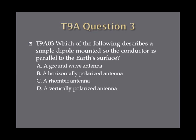Question 3: Which of the following describes a simple dipole mounted so the conductor is parallel to the earth's surface? A. A ground wave antenna. B. A horizontally polarized antenna. C. A rhombic antenna. Or D. A vertically polarized antenna.